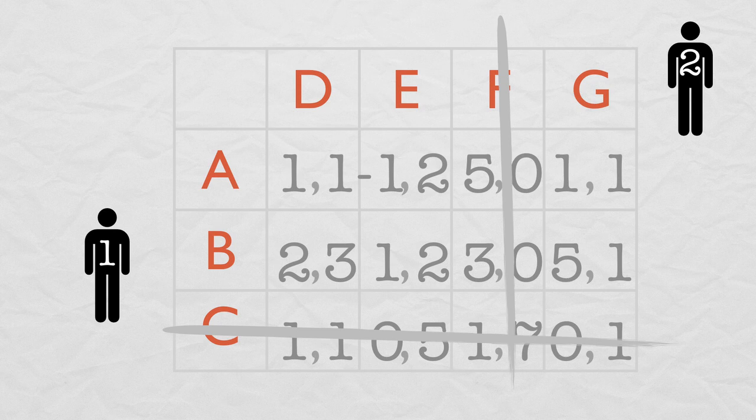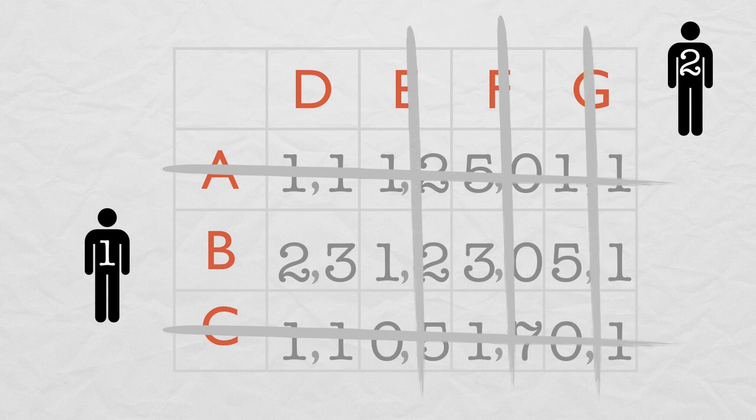With F deleted, Player 1 won't ever play A, since he can always be better off playing B. That leaves Player 1 playing B for sure, and Player 2 can clearly see that he gets his highest payoff in B, D, so he can eliminate E and G. So there you have it, an equilibrium.